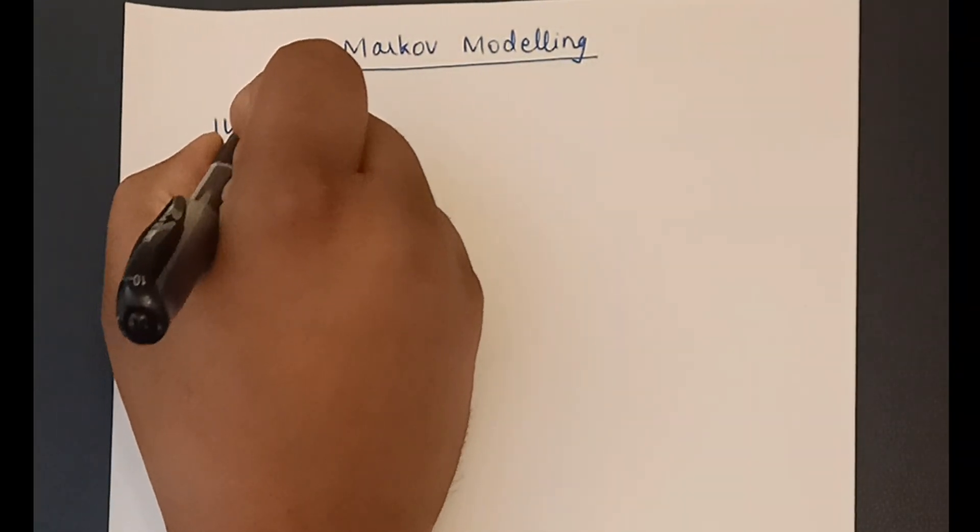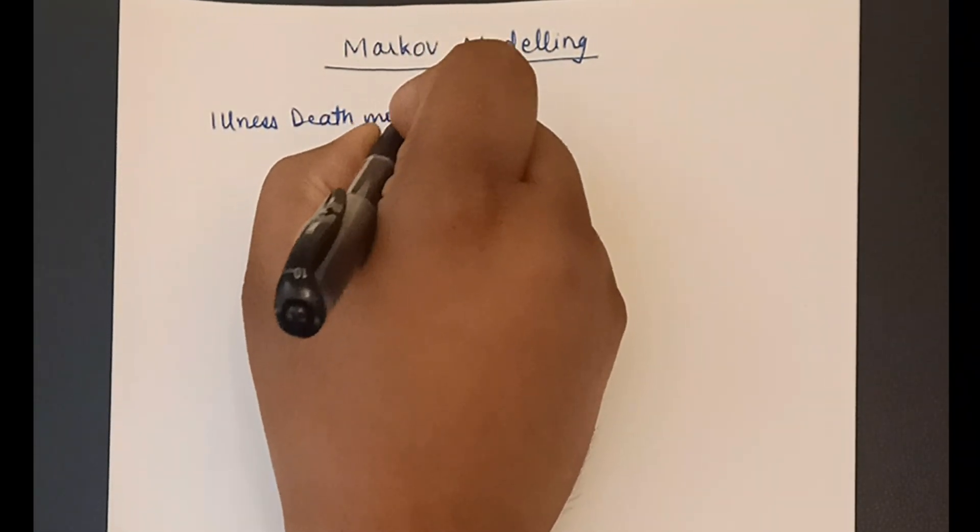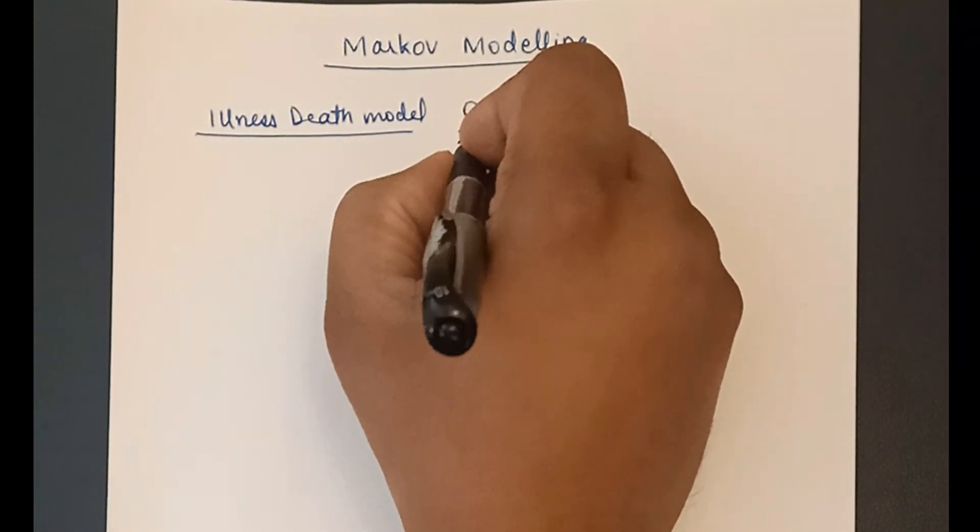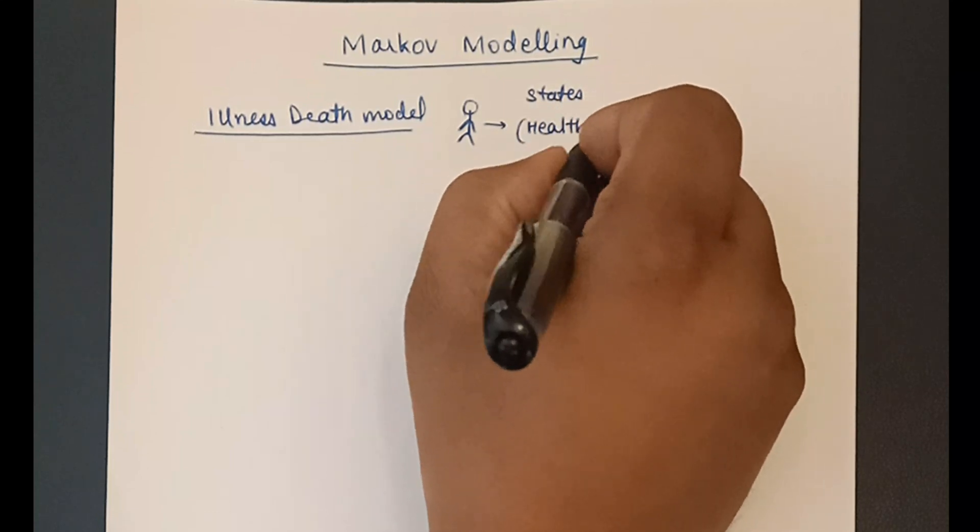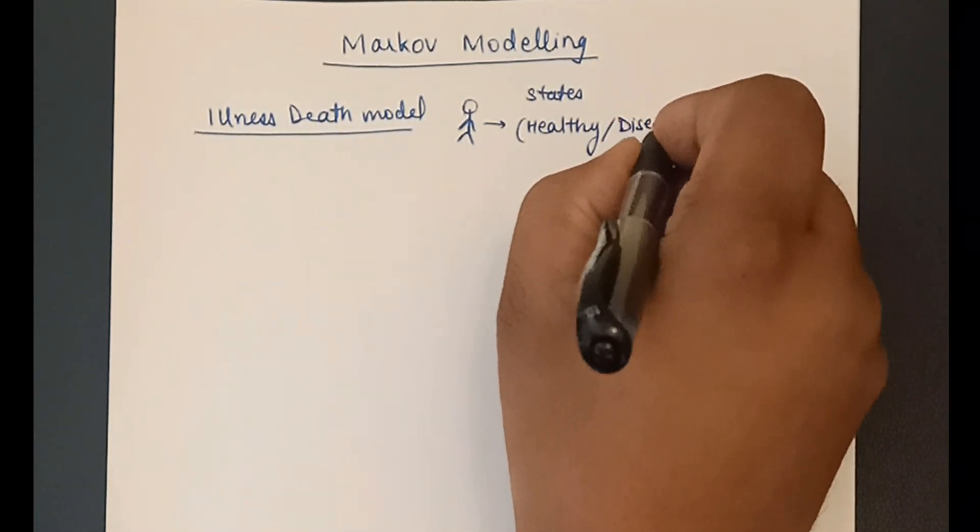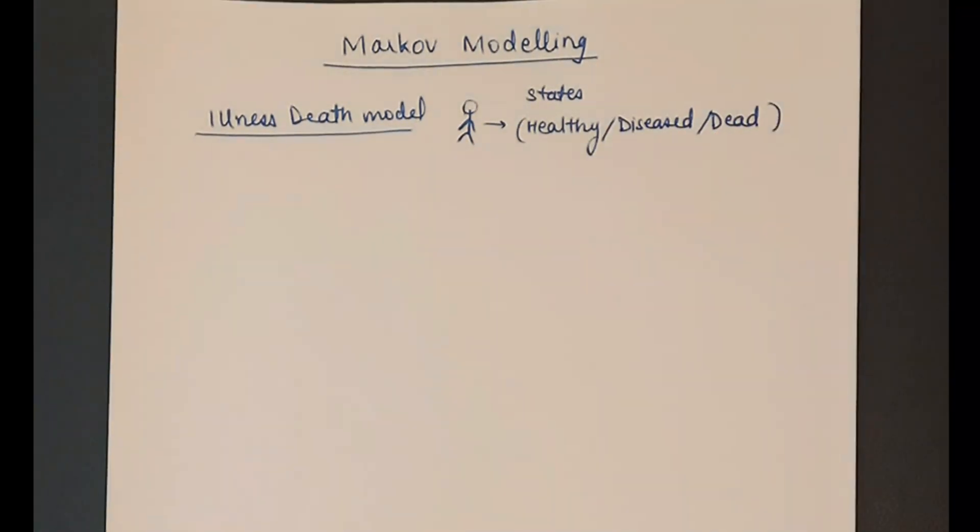Today we are going to see Markov modeling. In Markov modeling, there is something called states. For example, a person can be in a healthy state, a diseased state, or dead state. Any one person can be in one state and the person can go to other states as the time progresses. That is the assumption of Markov modeling.